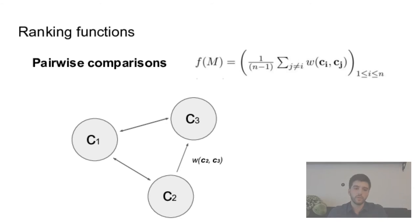And the last three methods belong to the family of pairwise comparisons. So instead of evaluating each candidate independently, here we compare them in pairwise versus. So you take each possible pair of candidates and compare them using a winning function that we call W. So the design of these W functions will define various possible ranking functions.